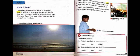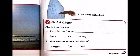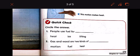We are here, so let's answer the quick check. People use fuel for what? For heat, ice, or lifting? So people use fuel for heat. Gas and wood are two kinds of fuel. The gas and the wood are two kinds of fuel.